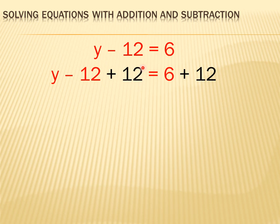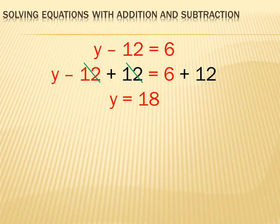So I add 12 to the right side of the equation as well. The minus 12 and the plus 12 cancel each other out, leaving just y on the left side. The right side reads y equals 6 plus 12. And 6 plus 12 is 18. So we've solved it: y equals 18 is the solution for y minus 12 equals 6.